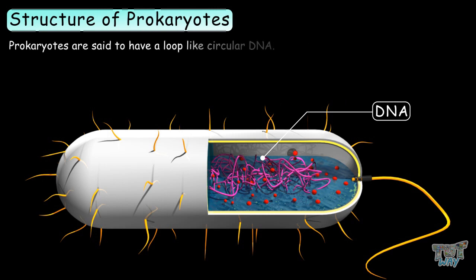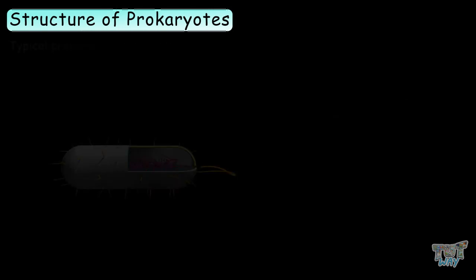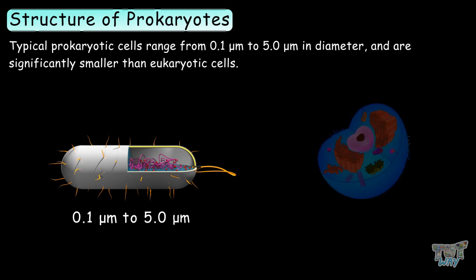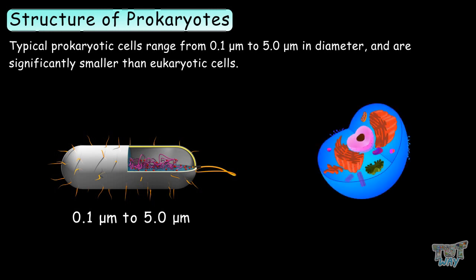Prokaryotes are said to have a loop-like circular DNA. Typically, prokaryotic cells range from 0.1 to 5 micrometers in diameter. These are significantly smaller than eukaryotic cells, which have diameters ranging from 10 to 100 micrometers.